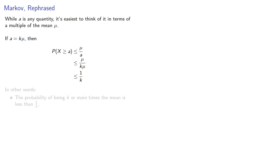In other words, the probability of being k or more times the mean is less than 1/k.